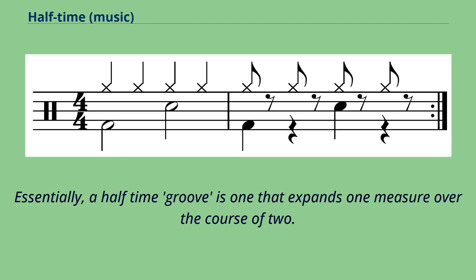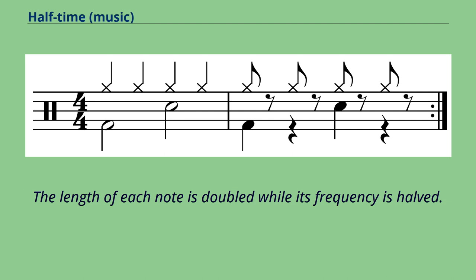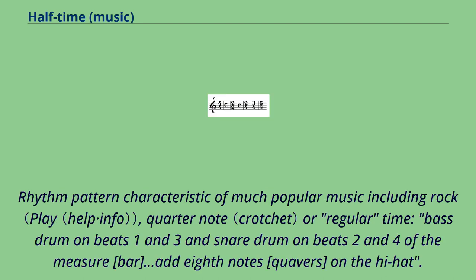Essentially, a halftime groove is one that expands one measure over the course of two. The length of each note is doubled while its frequency is halved. The rhythm pattern characteristic of much popular music including rock: in quarter note or regular time, the bass drum is on beats 1 and 3 and the snare drum on beats 2 and 4 of the measure, with eighth notes on the hi-hat.